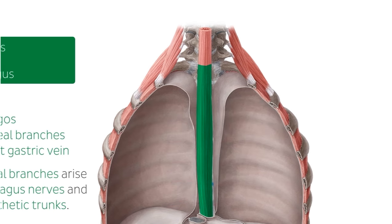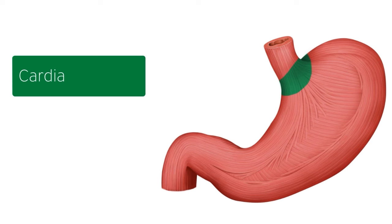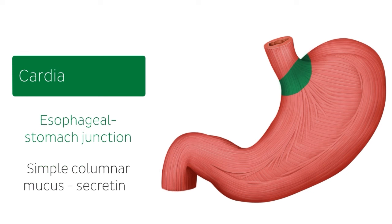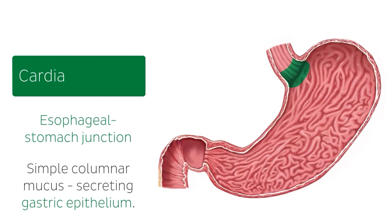The innervation of the esophagus is mainly supplied by the vagus nerves and sympathetic trunks. The terminal end of the esophagus connects to the cardiac part of the stomach, forming the esophageal-stomach junction. Here the stratified squamous epithelium of the esophagus abruptly changes into simple columnar mucous-secreting gastric epithelium of the stomach. In the next image we can see the internal structure of the stomach, including the rugae mentioned earlier and the cardia highlighted in green.